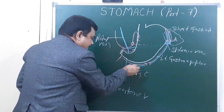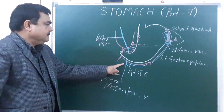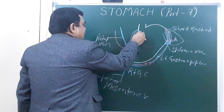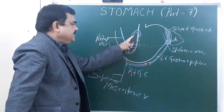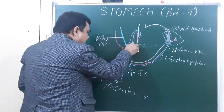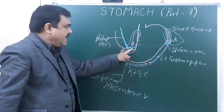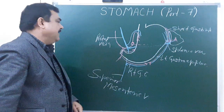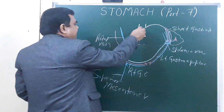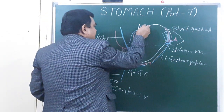The right gastro-epiploic vein drains into the superior mesenteric vein. The left gastric vein drains into the portal vein, and the right gastric vein also drains into the portal vein. Both the left and right gastric veins drain into the portal vein. This completes the venous drainage.